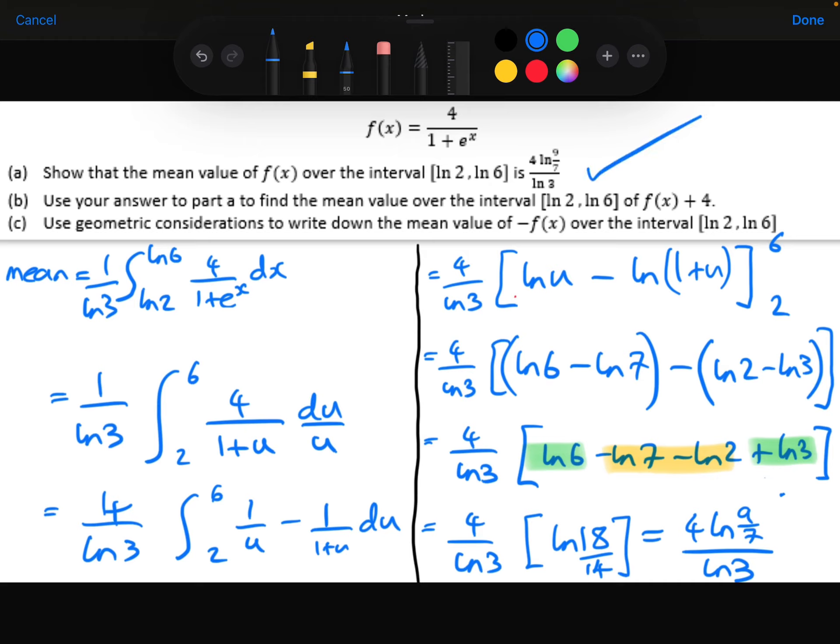So that's part A done. Part B. Use your answer to part A to find the mean value over the interval ln 2 to ln 6 of f(x) plus 4. Now don't worry, this is not a brand new question. It's the same interval. The only difference is f(x) plus 4.